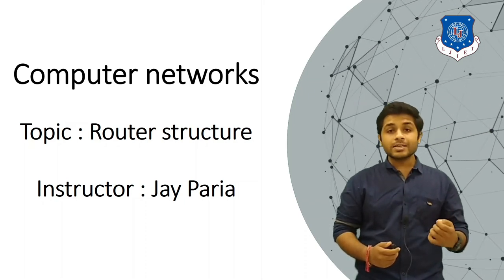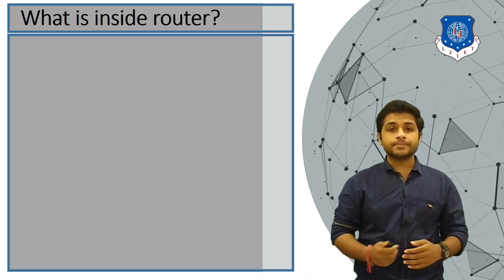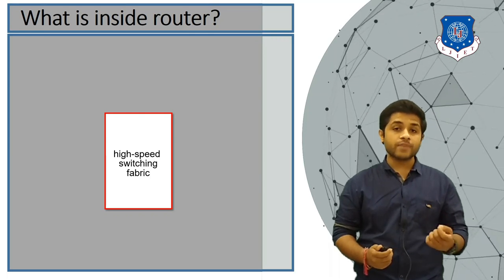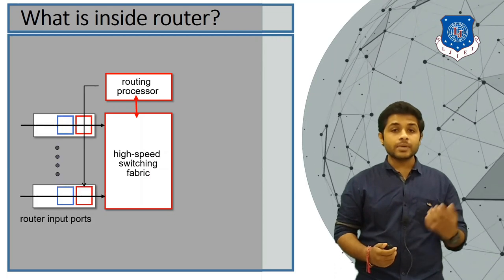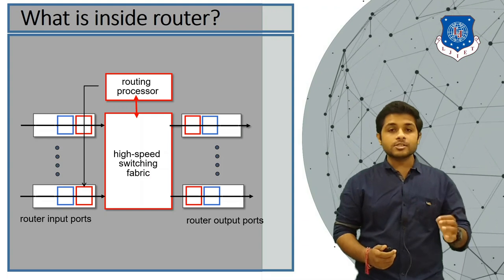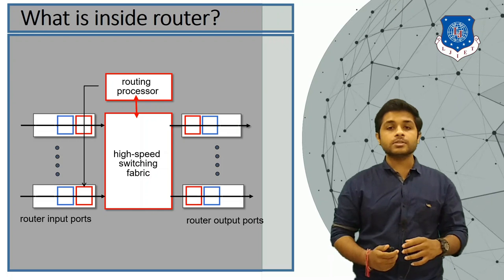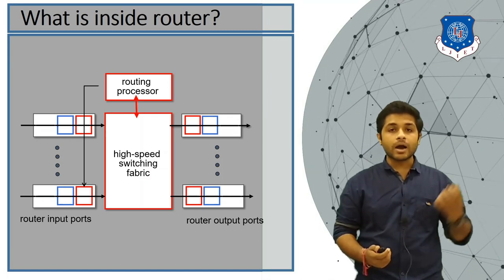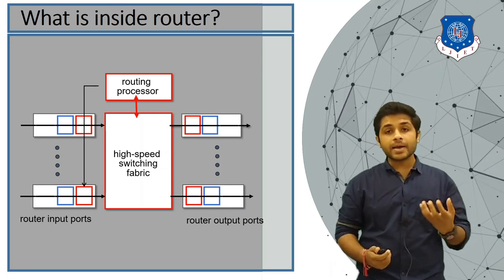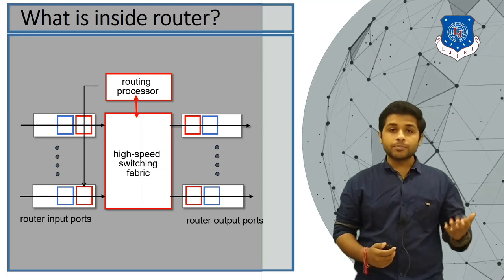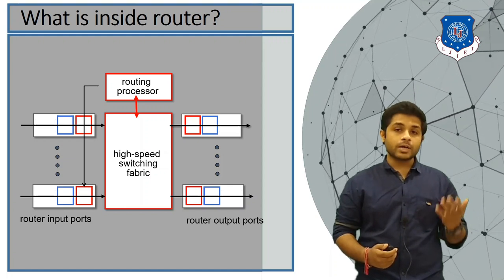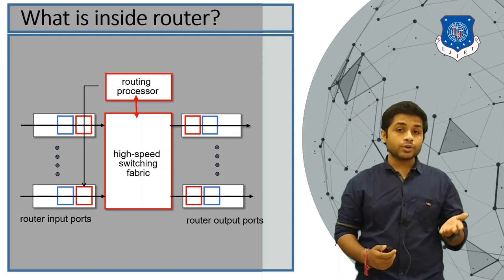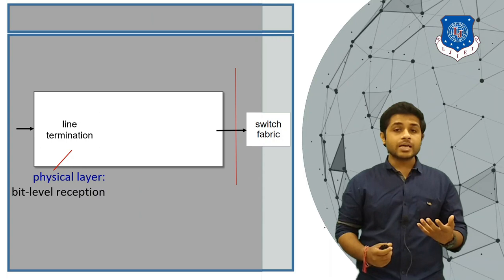Now we are going to see what is a router and what's inside it. In a router, there are mainly some blocks: the first block is high-speed switching fabric, then there is a routing processor, and there are some input ports and output ports. The router has a processor because it must analyze packets after receiving them. Input ports are used to receive data, output ports are used to send data, and the switching fabric is the hardware used to move data from input ports to output ports.